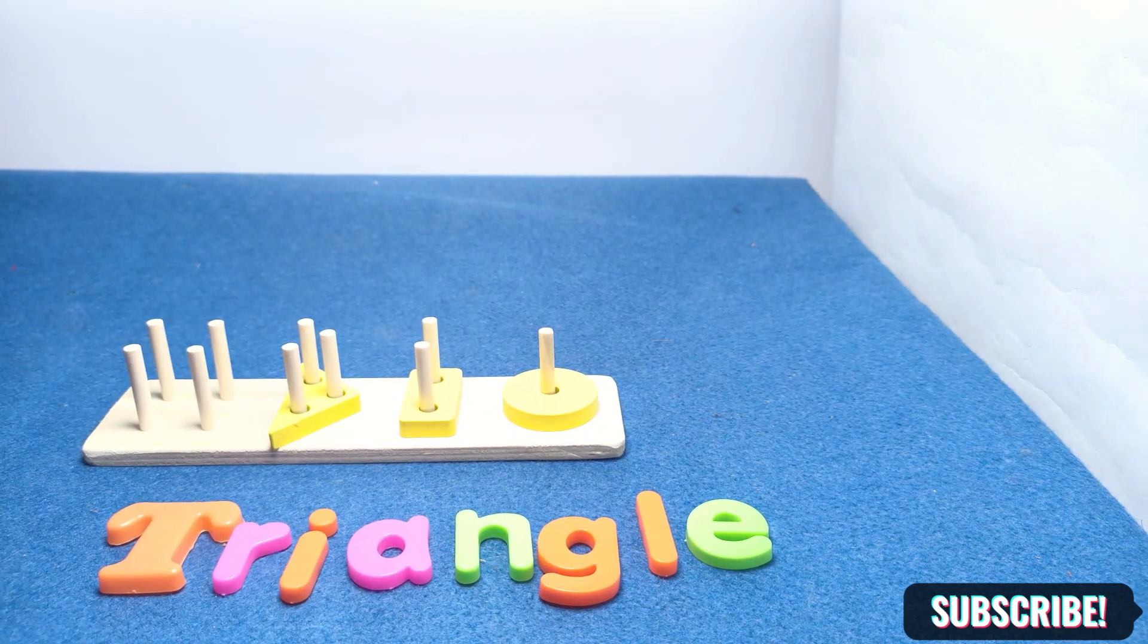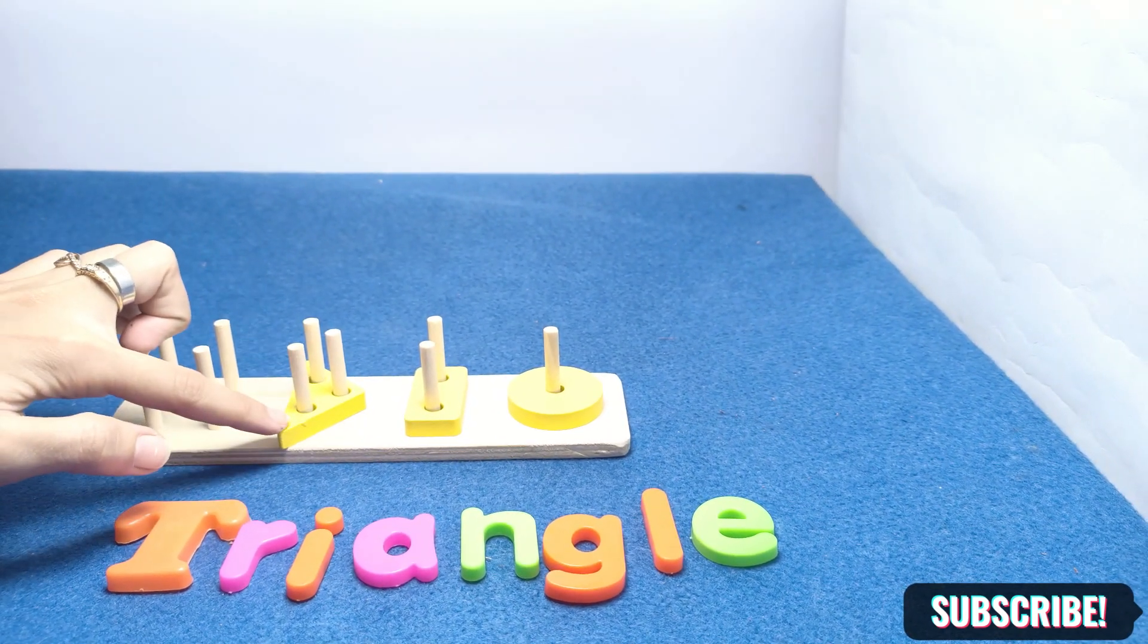Triangle has three sides: one, two, three. A yellow triangle.